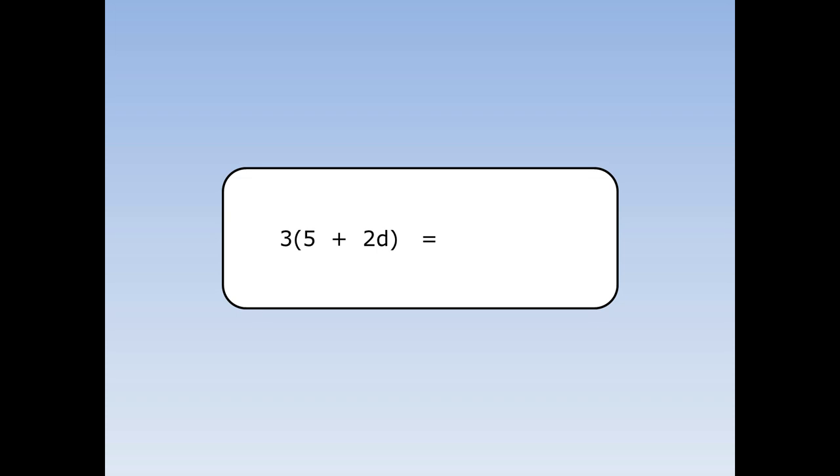We're going to multiply out this bracket. Remember, the 3 at the front multiplies everything inside the bracket. 3 times 5 is 15. 3 times 2d is 6d. When we multiply out the bracket, the answer is 15 plus 6d.